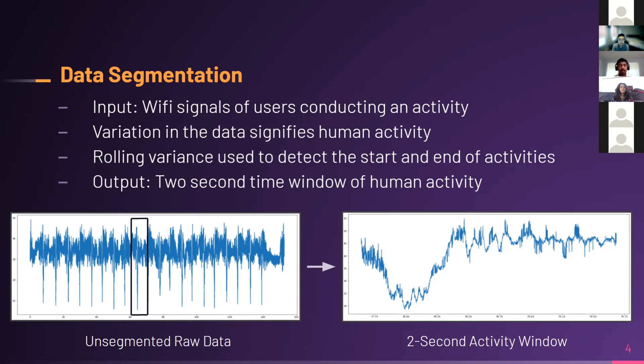As you can see in the bottom over here, we have our unsegmented raw data, and the computer went through and saw in that black chunk, in that black rectangle, there's the most variance, and we use that as our two-second time window.